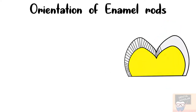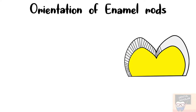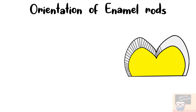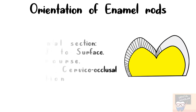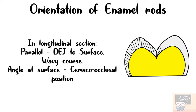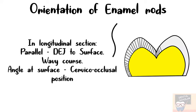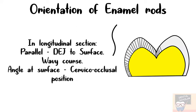Let's now go to the orientation of enamel rods — that is their arrangement in the enamel in longitudinal and transverse sections. In the longitudinal section, the enamel rods are arranged parallel to each other from DEJ to surface, and they follow a wavy course from DEJ to surface.